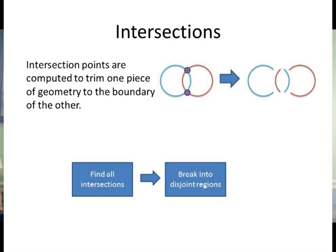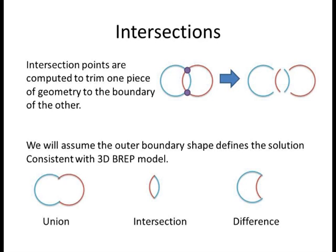Here we have two circular regions, one blue and one red. We start by finding the points of intersection between these two shapes and breaking the profiles at these points of intersection into disjoint parts. What we're trying to do is find the outside profile shape for the result of our Boolean operation. Having the shapes determined by their outer boundary parallels the 3D boundary representation model.